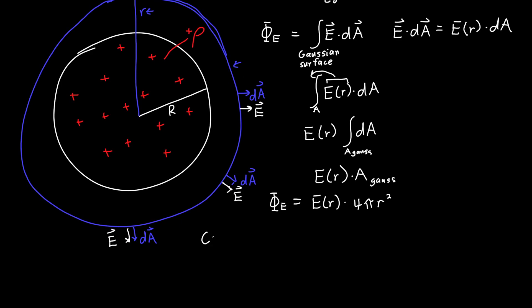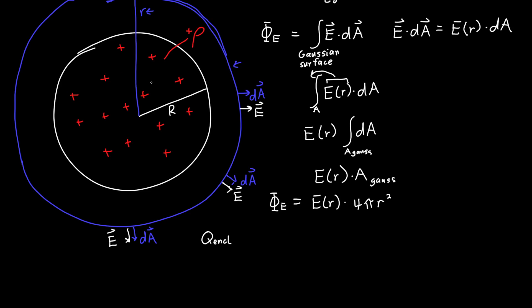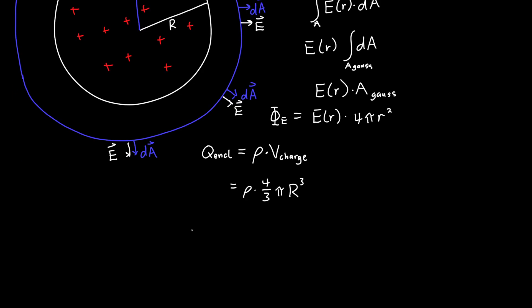Now all that's left is the charge enclosed. Our Gaussian surface encapsulates all of the charge — it doesn't depend on little r, only on the total charge inside the charged sphere. So the enclosed charge is rho times the volume of the charged sphere, which is rho times (4/3)π big R cubed.